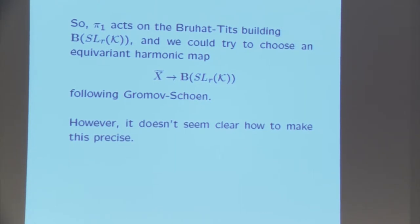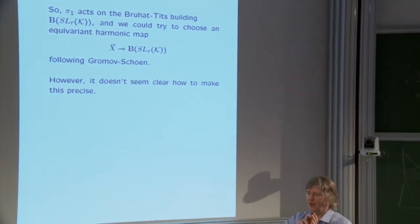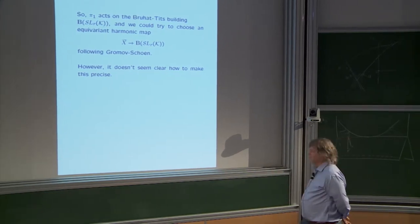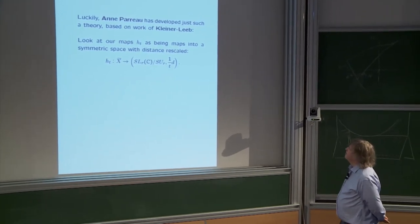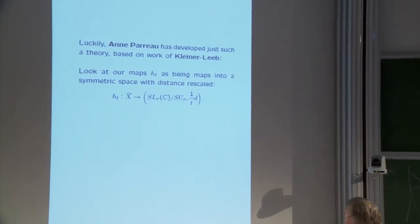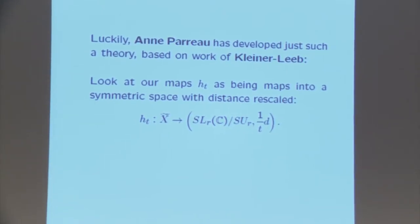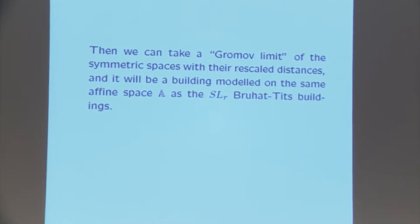Here's the basic idea, though I don't know how to make it fully precise. Consider the field of germs at infinity of functions on ℝ, with evaluation given by the exponential growth rate. Then our family of monodromy representations gives a map from π_1(X, x_0) into SL(r) of this field K. This group acts on the Bruhat-Tits building, and we could try to choose an equivariant harmonic map from the universal cover into the Bruhat-Tits building following Gromov-Schoen.